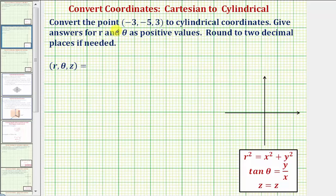We're going to convert the point with Cartesian or rectangular coordinates negative three comma negative five comma three. We want to use positive values for both r and theta, and we're asked to round to two decimal places if needed.